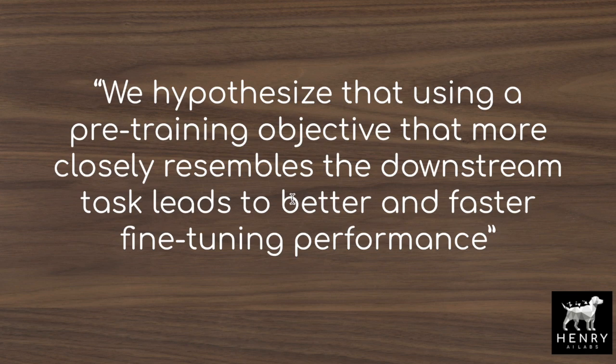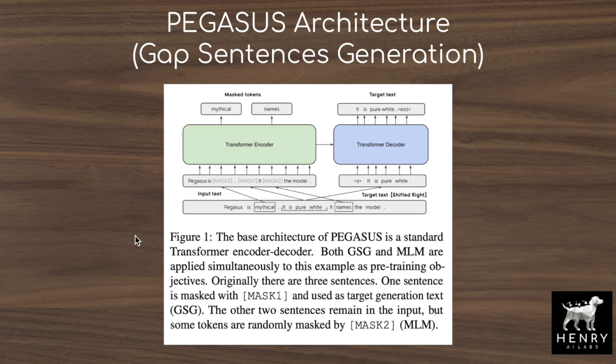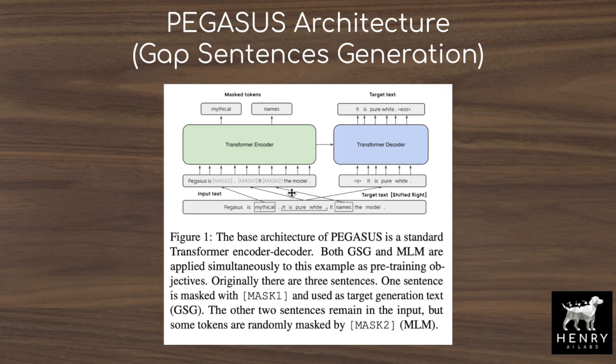The new pre-training task in Pegasus is gap sentences generation. The idea is that we have a document and mask out entire sentences, which is better aligned with abstractive summarization because it teaches the model to aggregate information to predict a large amount of intermediate context, compared to masked language modeling where we just mask out one token like a name, using a much smaller mask compared to masking out an entire sentence.